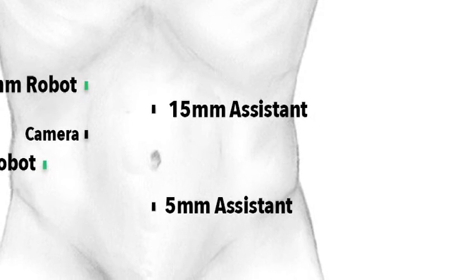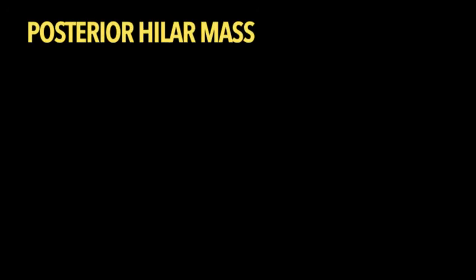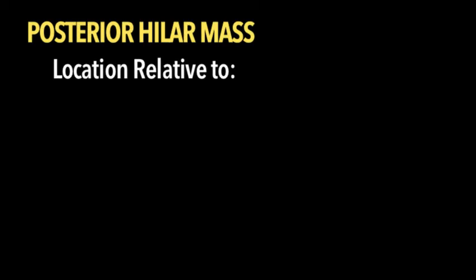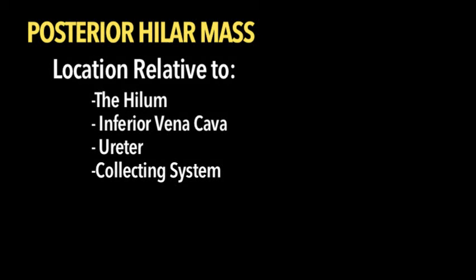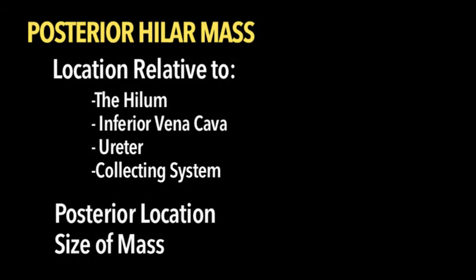The ports accommodate the ultrasound probe. In this patient with a posterior hilar mass, factors such as location relative to the hilum, inferior vena cava, ureter, and collecting system, posterior location, and size of the mass must all be taken into consideration prior to initiating a robotic partial nephrectomy.